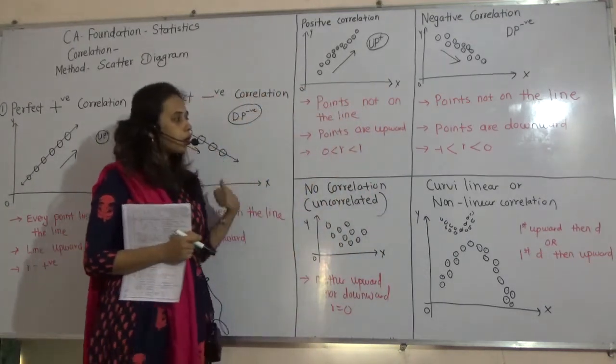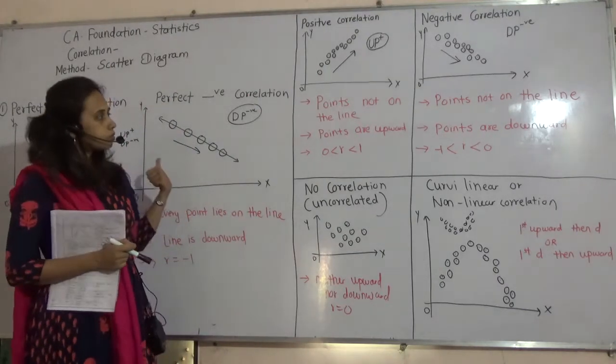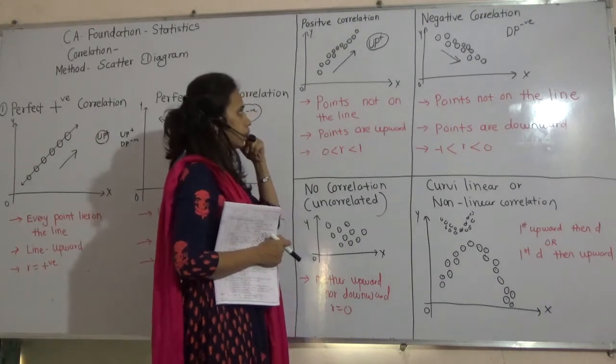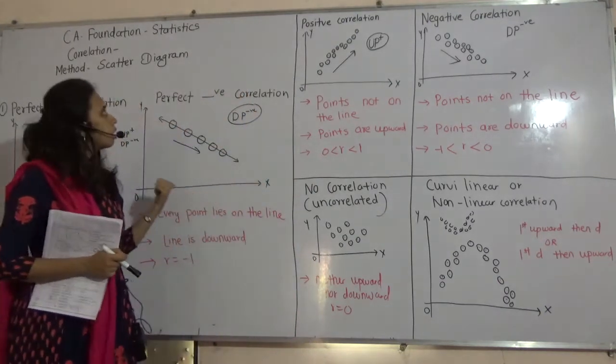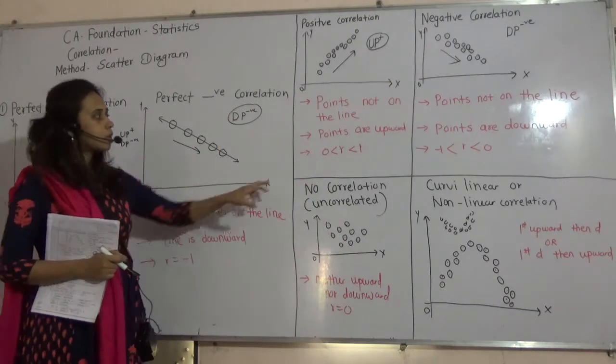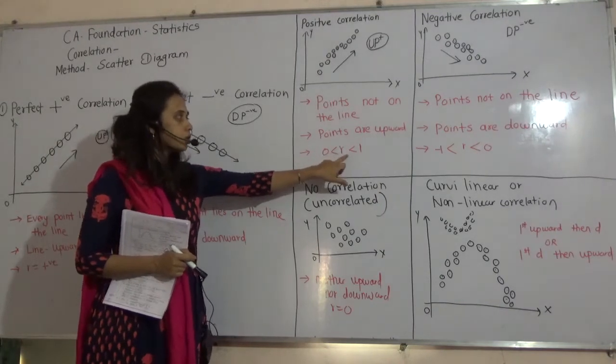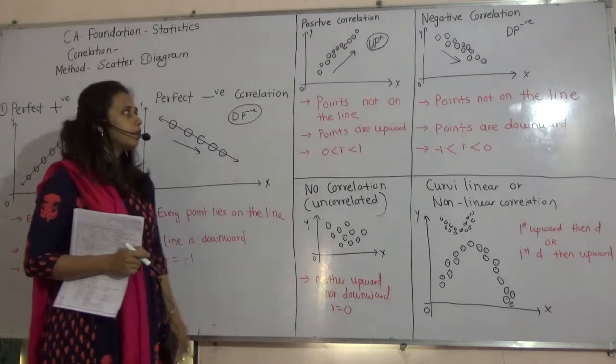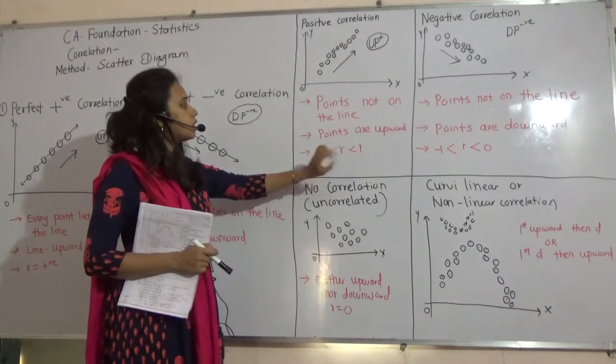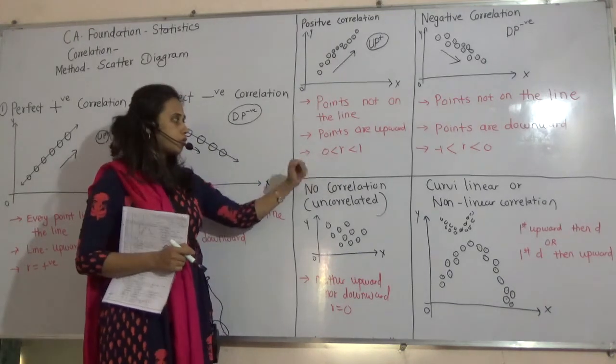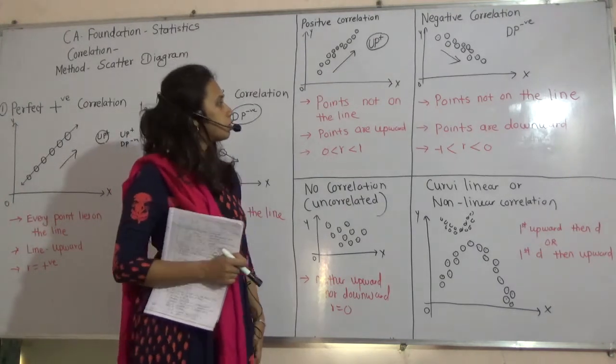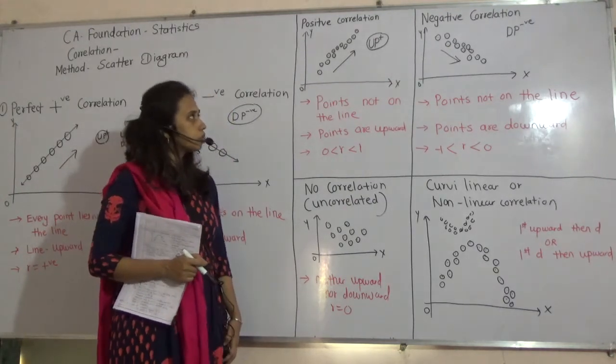We have done with all the types of scatter diagram. Mostly, they will ask you objective type questions, theoretical questions based on it. So, just go through it. Remember these shortcuts and draw the diagram. See, remember these value also. R value also. Maybe, they will ask you to get confused. For example, for positive correlation, what is R and they will provide you four options. So, remember this part also. Please draw. Thank you.